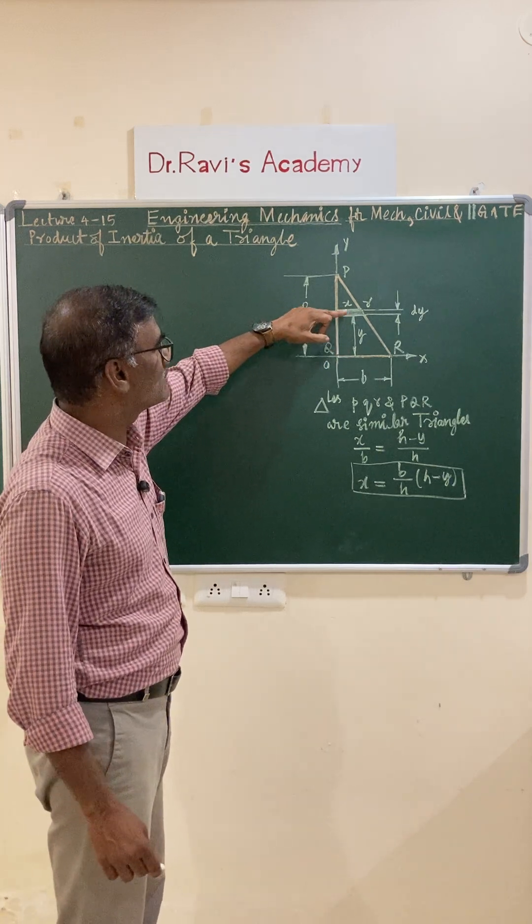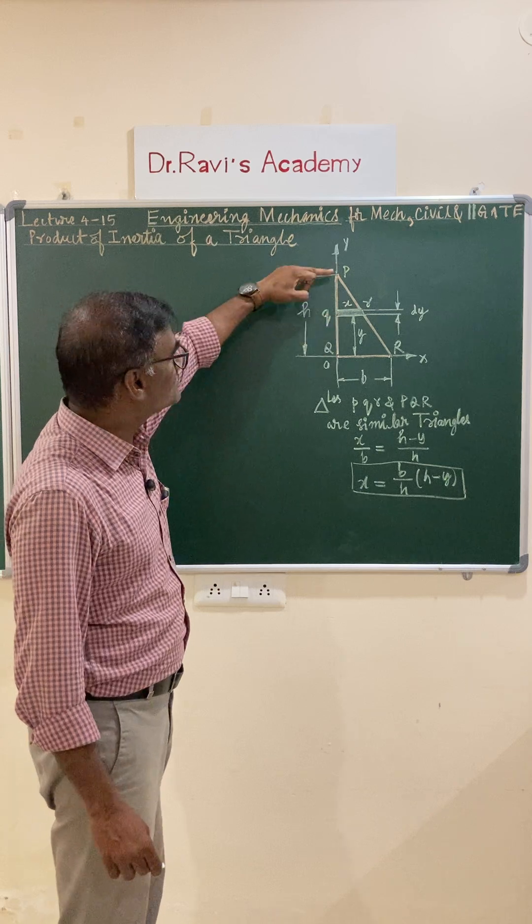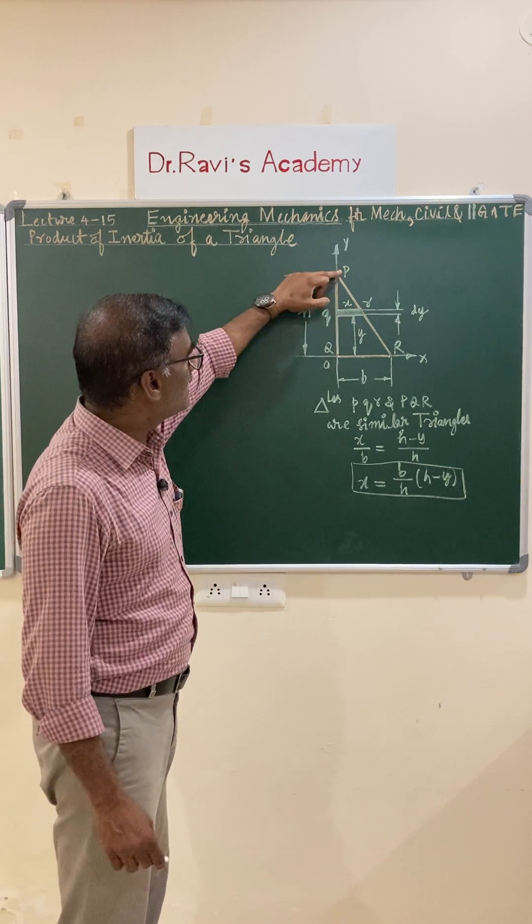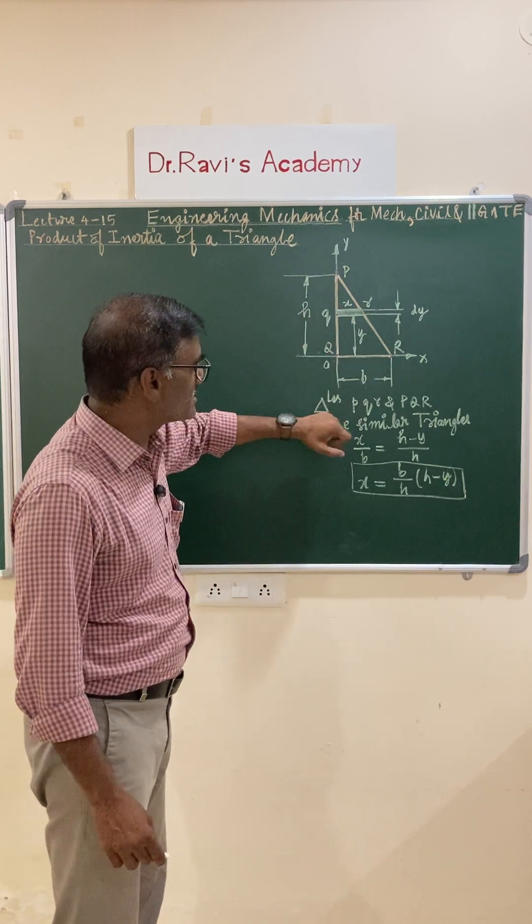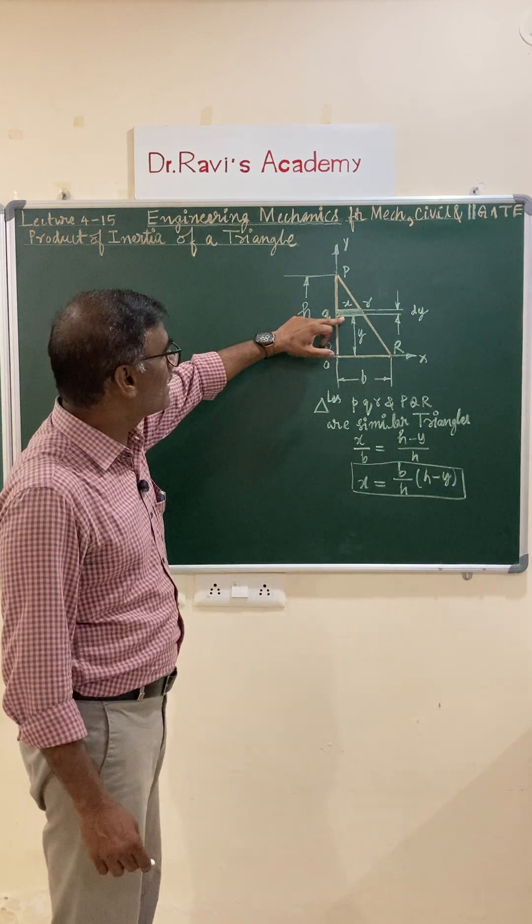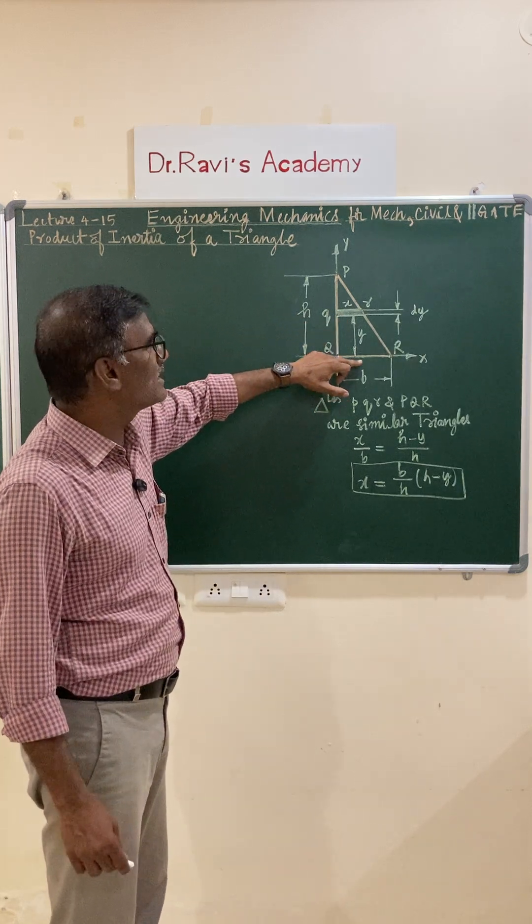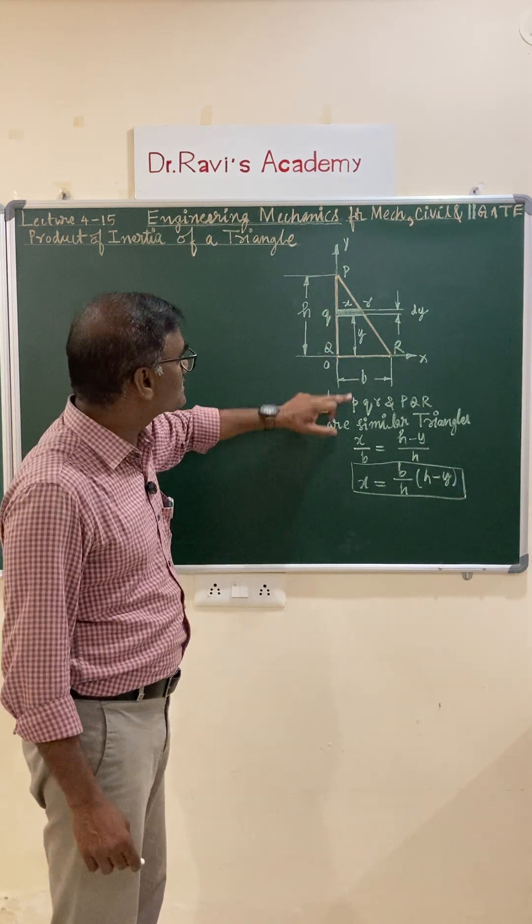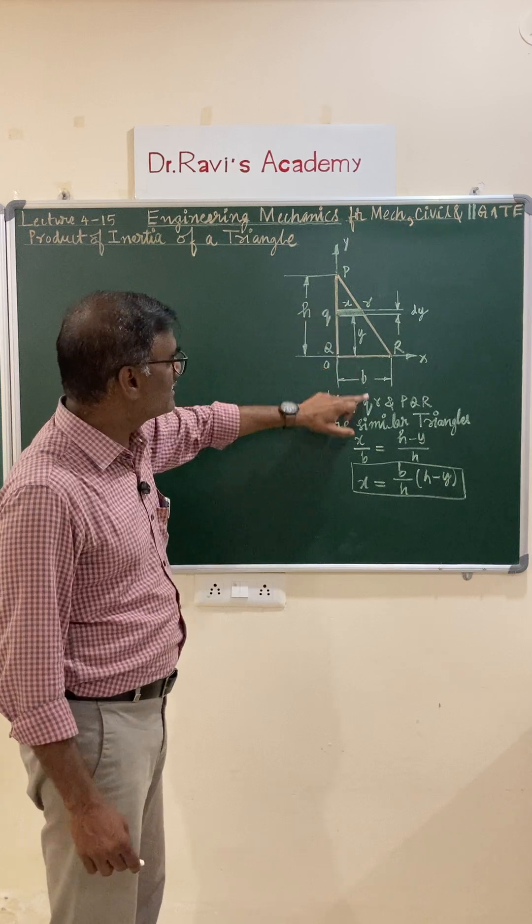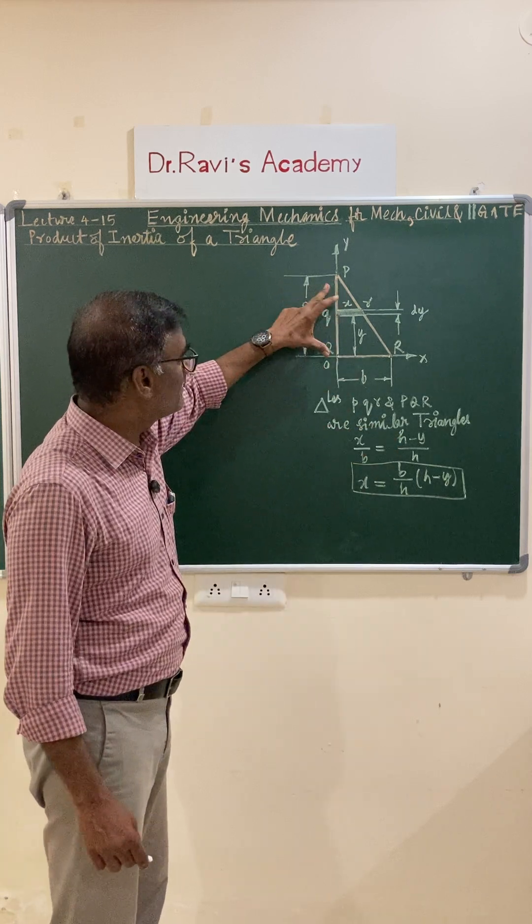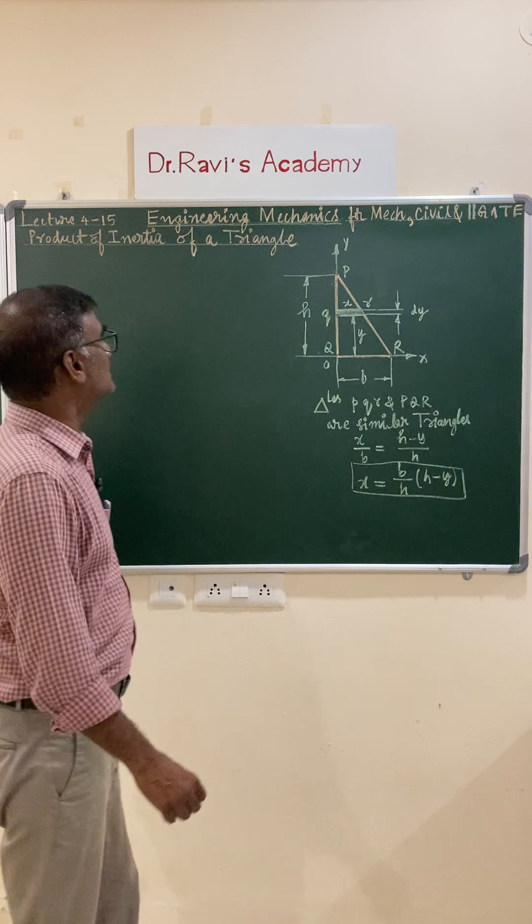Observe carefully, pqr and P capital QR are similar triangles. Because x is variable, at the bottom it is base b and at the top it is zero. So x/y equals b equals h minus y by h, and you will get x value.